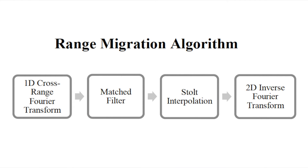The range migration algorithm was chosen for the image formation process and consists of four major steps: a one-dimensional cross-range Fourier transform, a matched filter application, a Stolt interpolation, and a two-dimensional inverse Fourier transform.